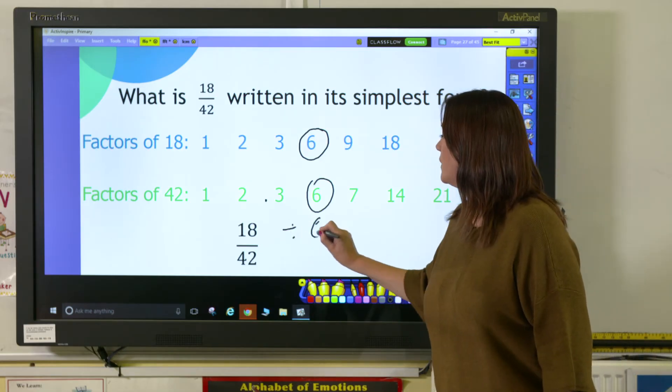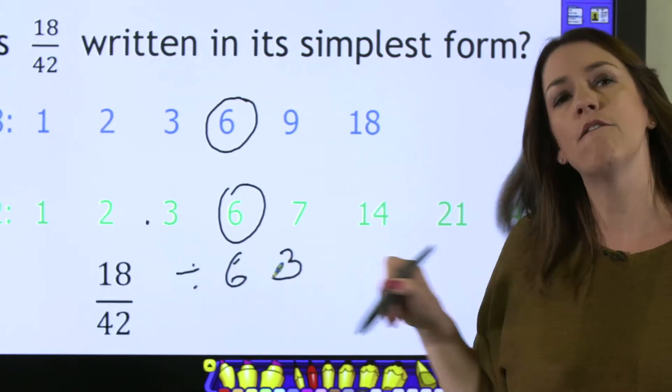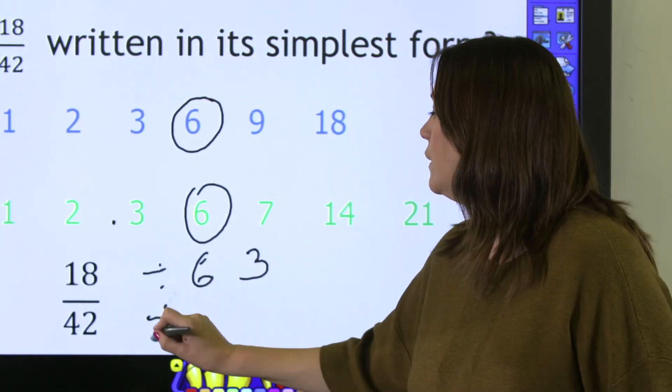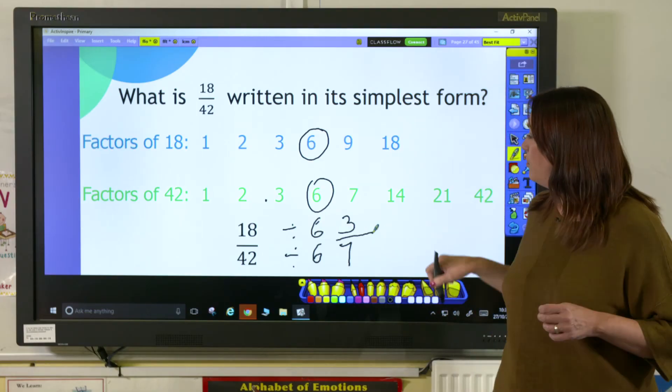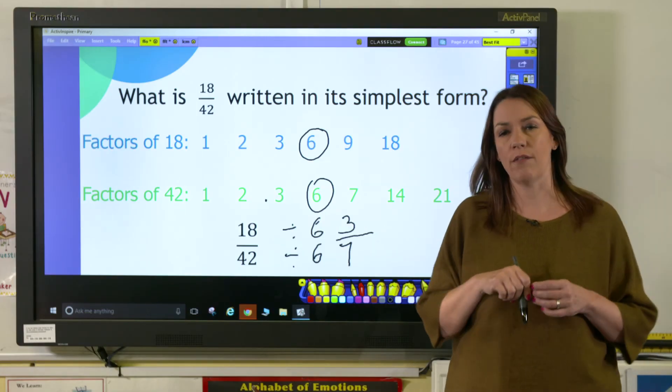18 divided by 6 is 3, and 42 divided by 6 is 7. So I now have a fraction of 3/7 in its simplest form.